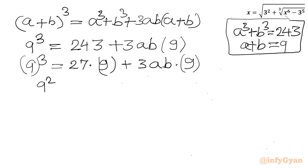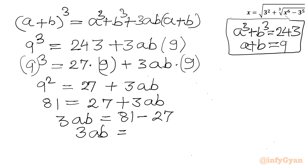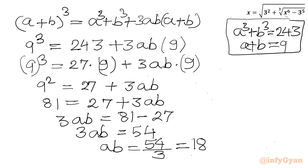Dividing through by 9 gives 81 = 27 + 3AB. So 3AB = 81 − 27 = 54. Dividing both sides by 3, we get AB = 54/3 = 18. So our simplified system is A + B = 9 and AB = 18.